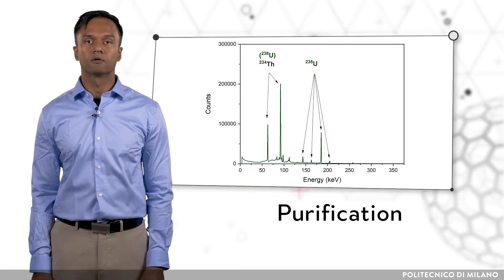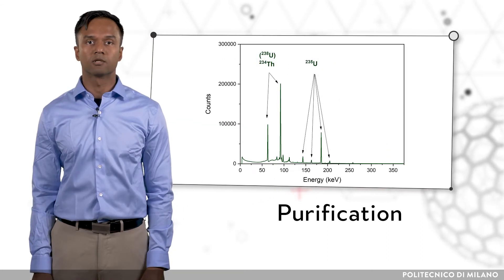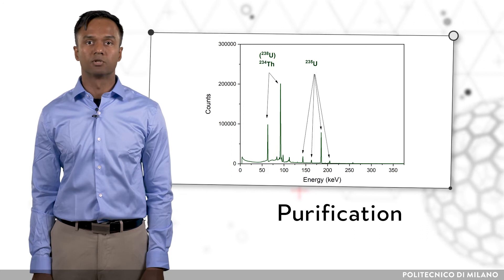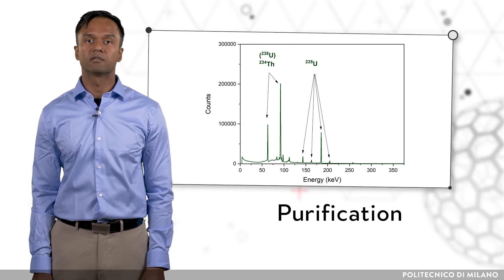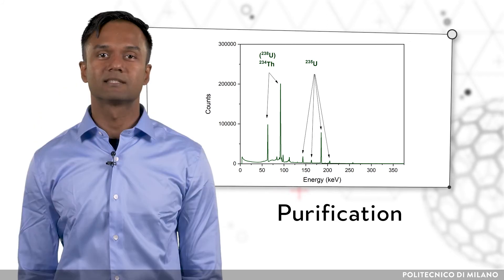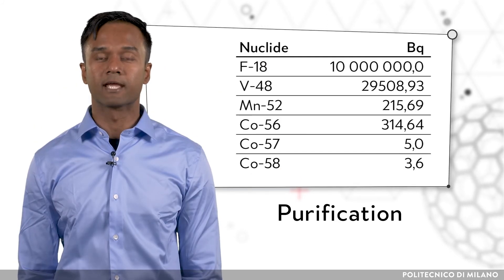The purity of the radioisotope, both radioisotopic and radionucleidic, can be determined using a gamma spectrometer. Let's see the data for the purity of fluorine-18.